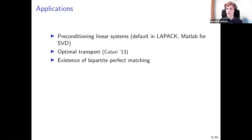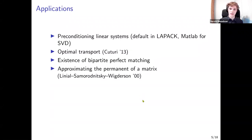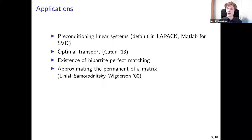Another application is the optimal transport problem by Kantorovich. It's also related to the existence of a bipartite perfect matching: specifically, for the bipartite adjacency matrix, you can use these problems to approximate the permanent of a matrix. In a bipartite graph, there exists a perfect matching if and only if the permanent is non-zero — the permanent being the determinant without the sign. So it has applications in combinatorics as well.